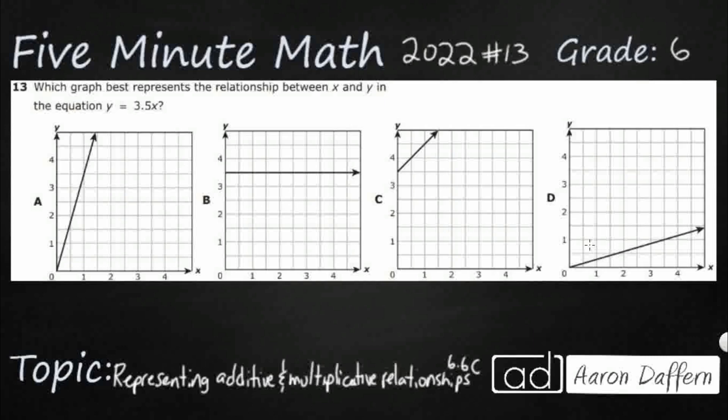So, which graph best represents the relationship between x and y? And there we go. So y equals 3.5x. This is a multiplicative relationship because if you don't have any operation between a number and a variable, it is always assumed that you are going to multiply.